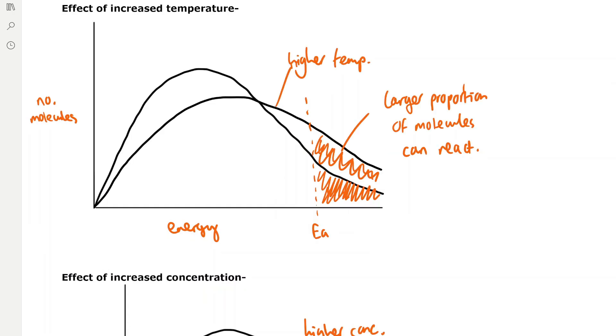We can determine the effects of different conditions on the Boltzmann distribution. For example, if we increase the temperature, then more molecules are going to have a higher energy. This means that a large proportion of the molecules have an energy higher than the activation energy, so they can react upon collision in the correct orientation. You can see that this line for the higher temp is lower at the start and higher at the end, because a larger proportion of the molecules have more energy.